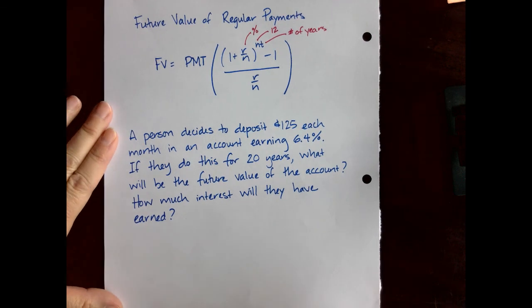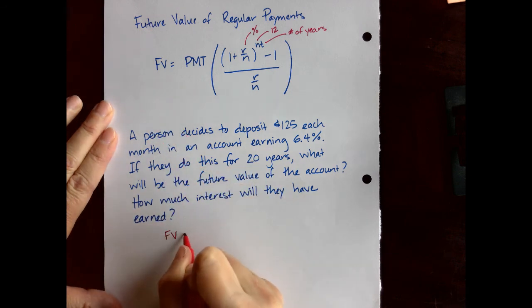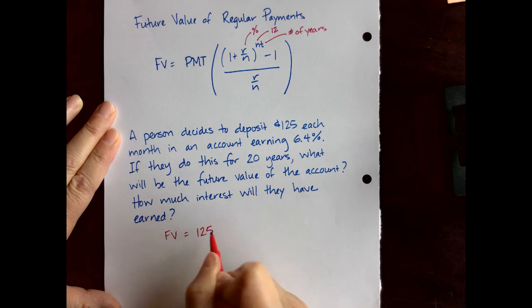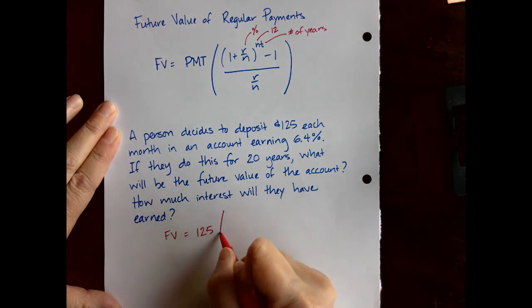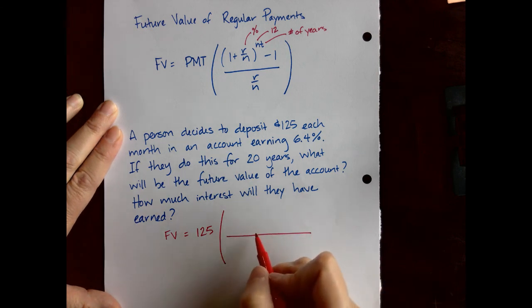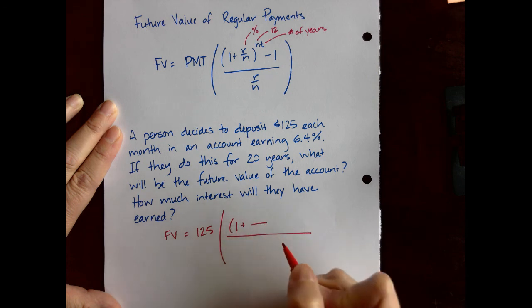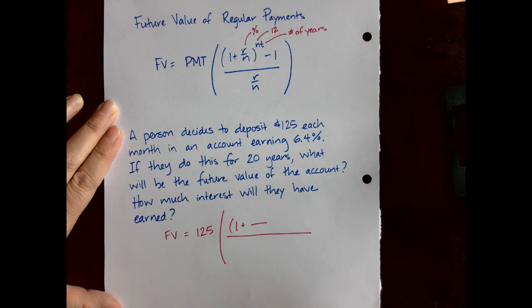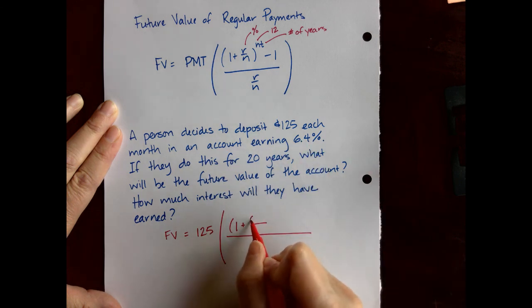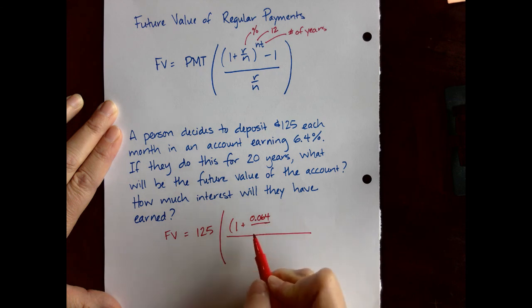To make this work we are looking for the future value, sometimes called the maturity value. The payment that they make each month is $125. So we will have that as a multiplier on the front of our equation outside of this giant fraction. Inside the fraction in the numerator we will have the quantity 1 plus and we need to make the comparison of the interest rate and the number of payments per year. Our interest rate was 6.4 percent and as a decimal we would get 0.064 for that. We are making monthly payments so our N value will be 12.